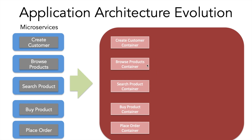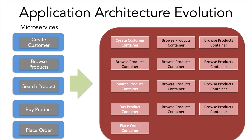Each container is an isolated, packaged environment that includes the operating system, application dependencies, the programming language, and the application itself. Taking the earlier scaling example: if a lot of users are browsing products, you can scale the browse products container individually, spinning up multiple containers on the same host until it can handle all your users. If the host cannot hold any more containers, you can add more hosts. For AWS that means using Auto Scaling Groups; for Azure you'd use Virtual Machine Scale Sets.